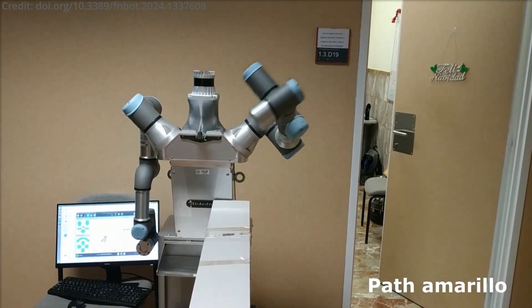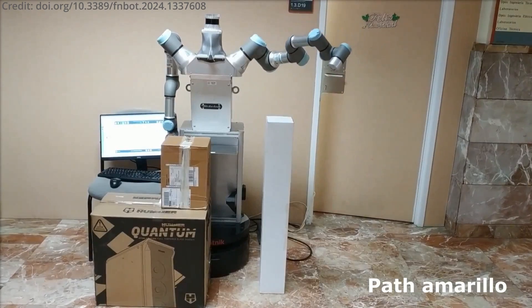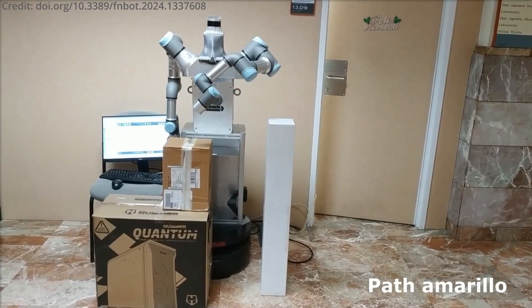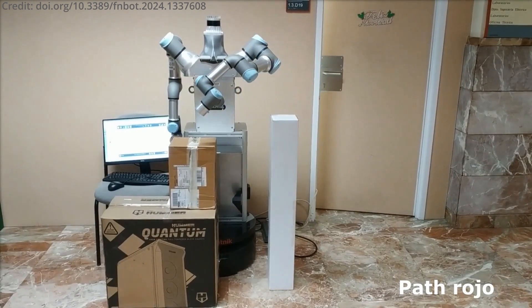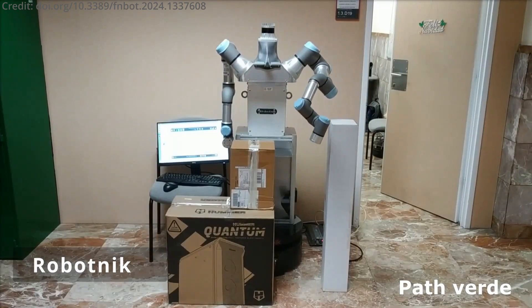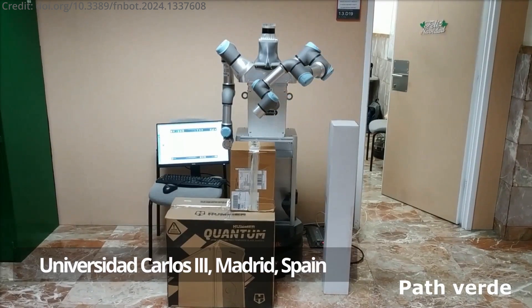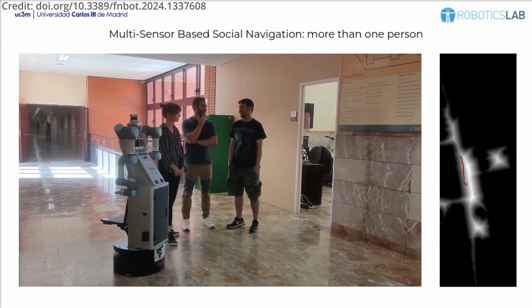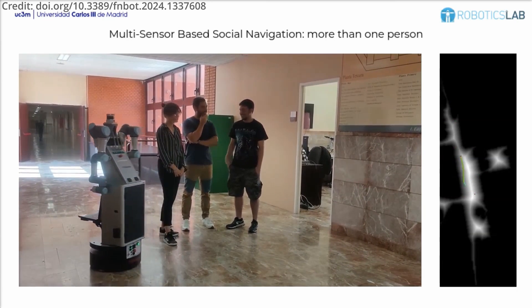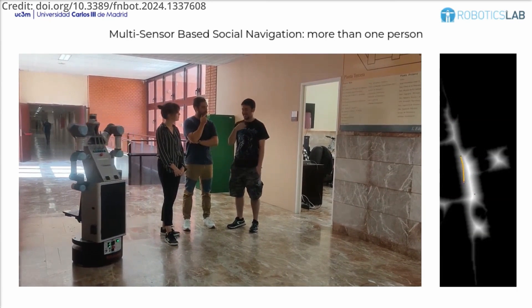Future improvements will focus on enhancing ADAM's perception system, bimanual capabilities, and task planning strategies, with the ultimate goal of creating a more complete robotic companion for elderly care. Researchers from Robotnik and UC3M emphasize the need for real-world testing in authentic domestic environments to fully assess its effectiveness and user satisfaction moving forward.